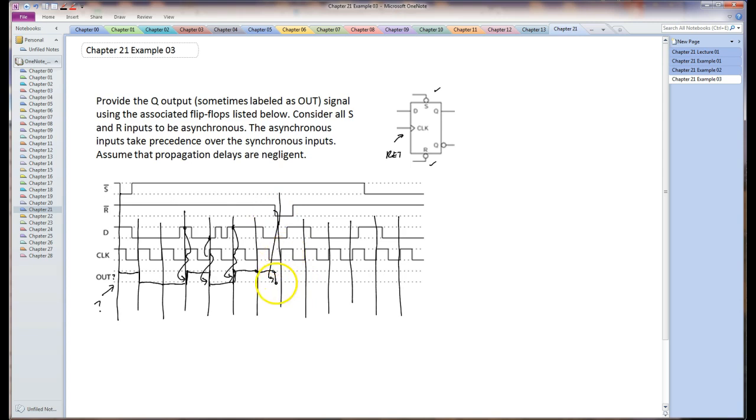And at this clock edge it doesn't set again and we don't have to worry about this. There is an issue because the reset is on at the same time as the clock edge, so the problem should state exactly what happens on that one. But since it's not trying to set right there we don't have to worry about it. The reset turns off at this point. It stays reset that whole time.